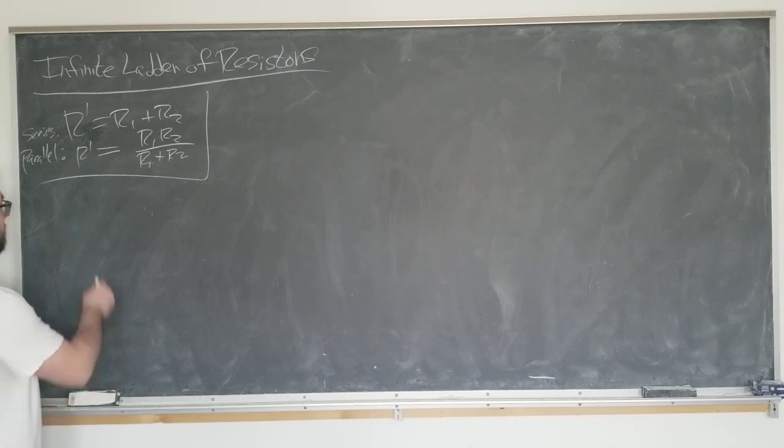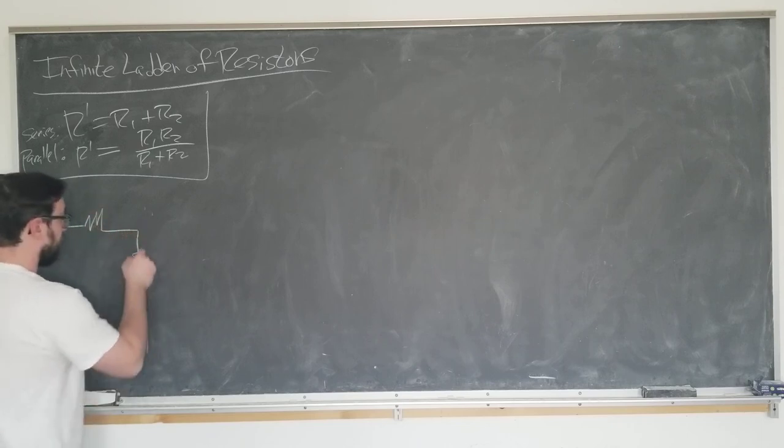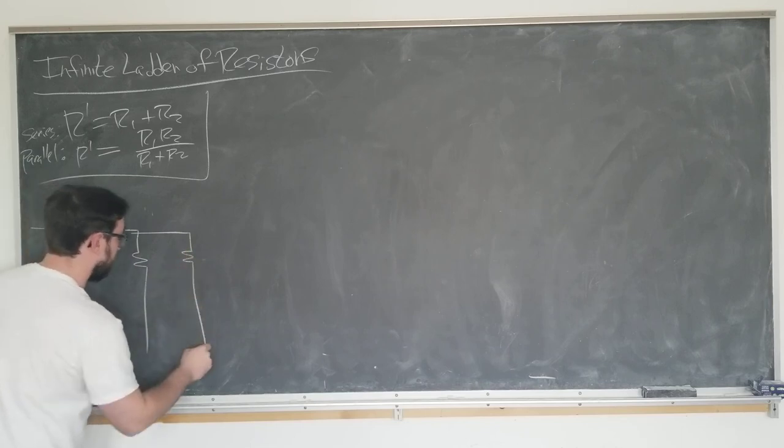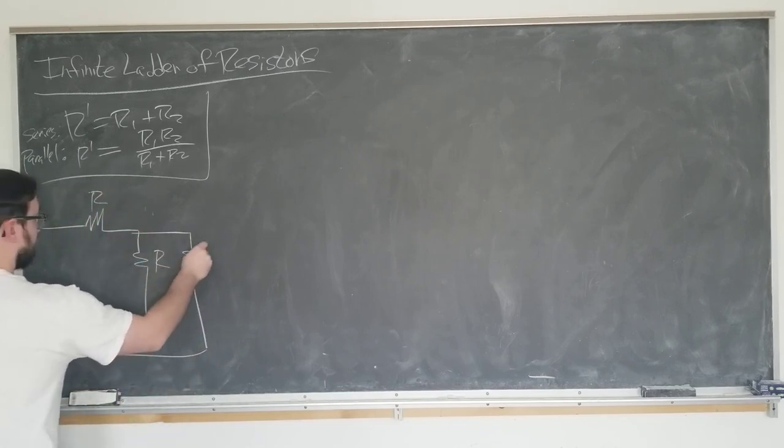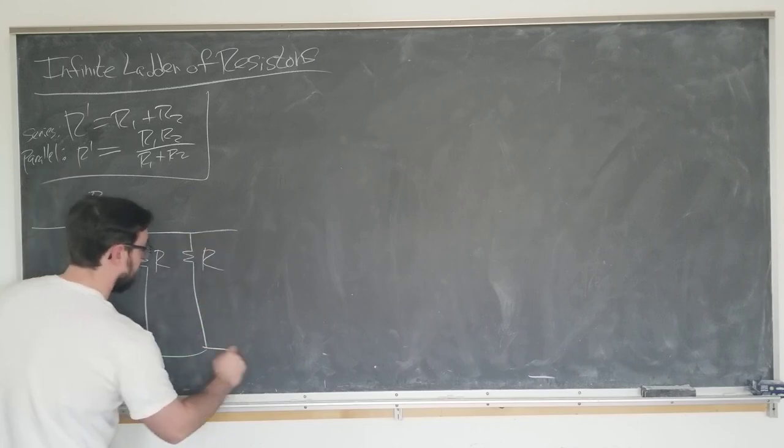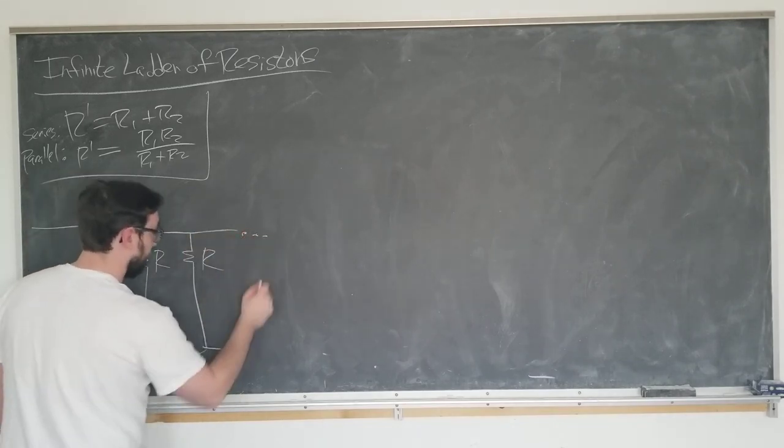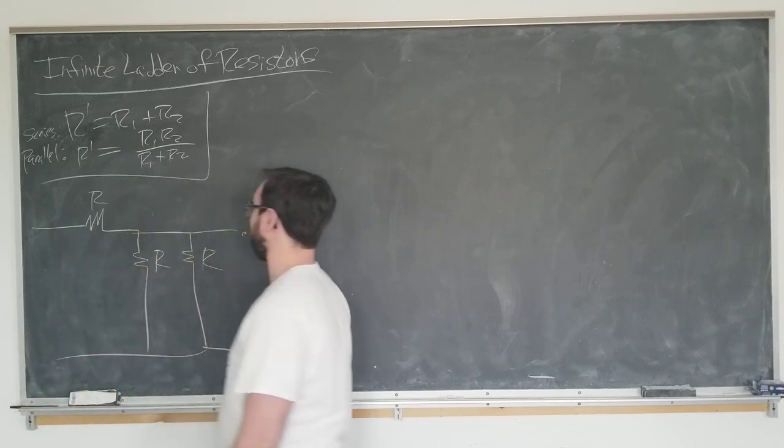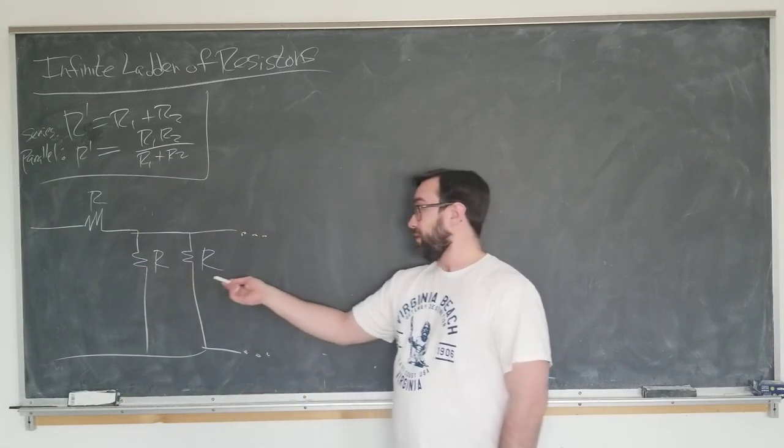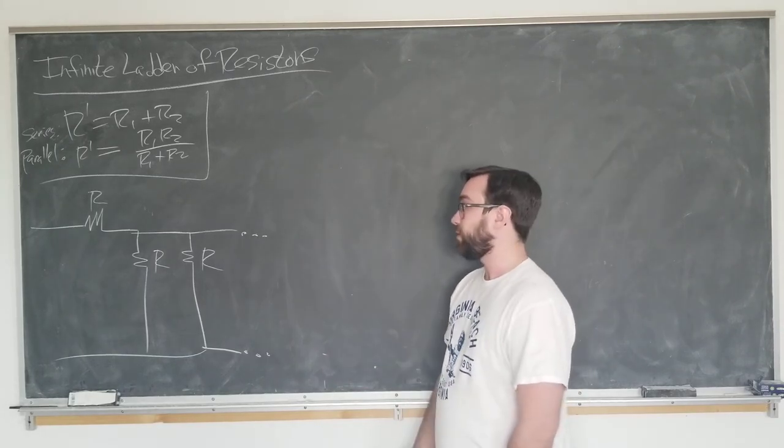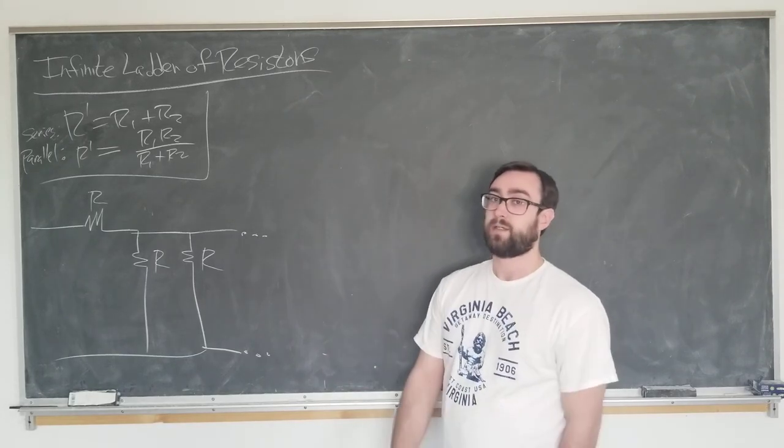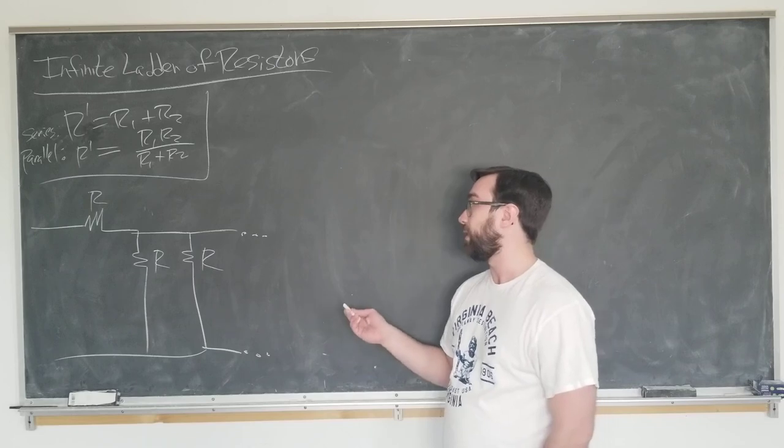Let's consider the ladder in question. We'll talk about a ladder of resistors defined as follows. Resistor here, resistor here, resistor here, all of resistance R, and this actually goes on forever. So we have series and parallel combinations going on forever. Let's see what we can learn about these from the series and parallel combinations.